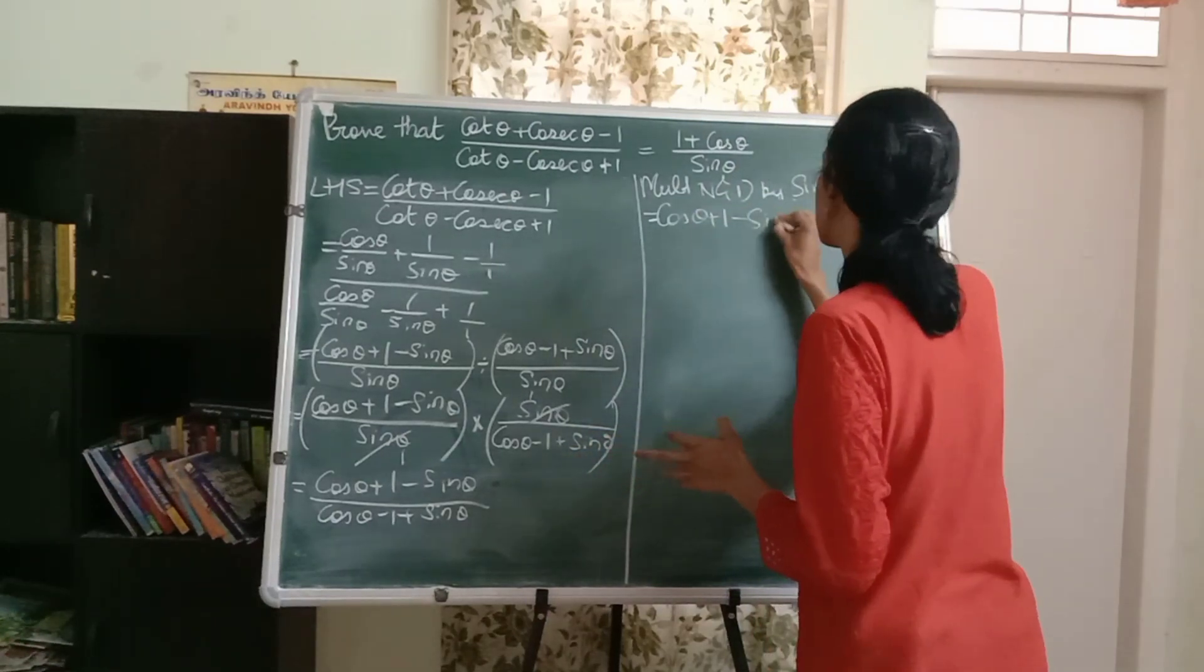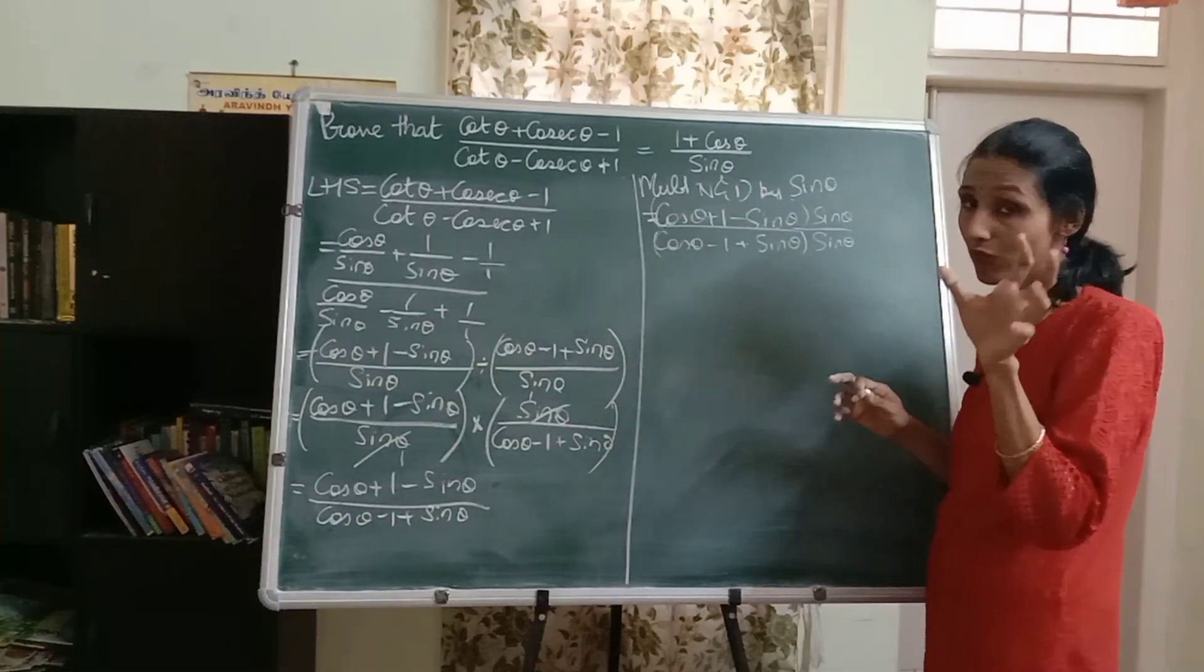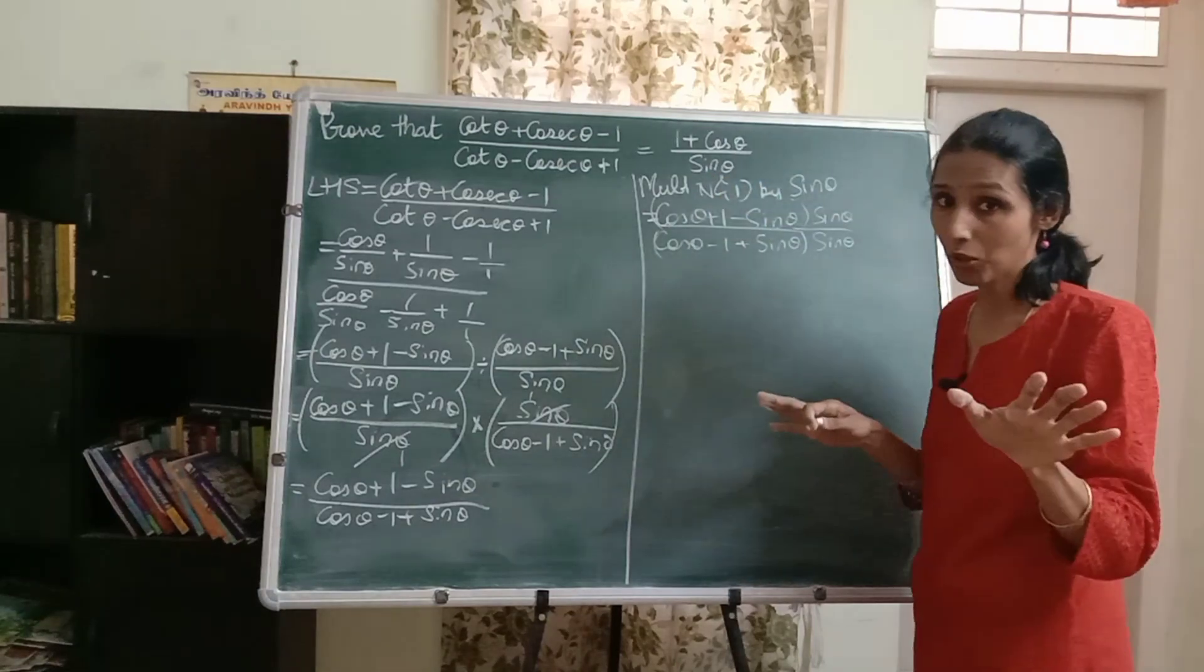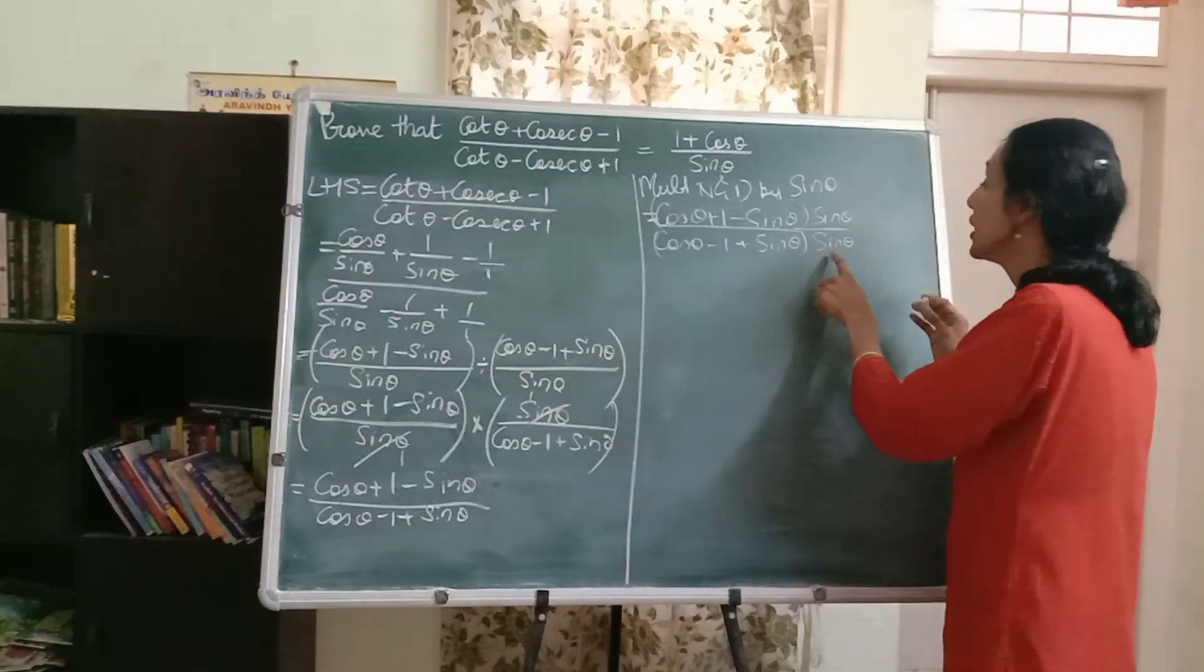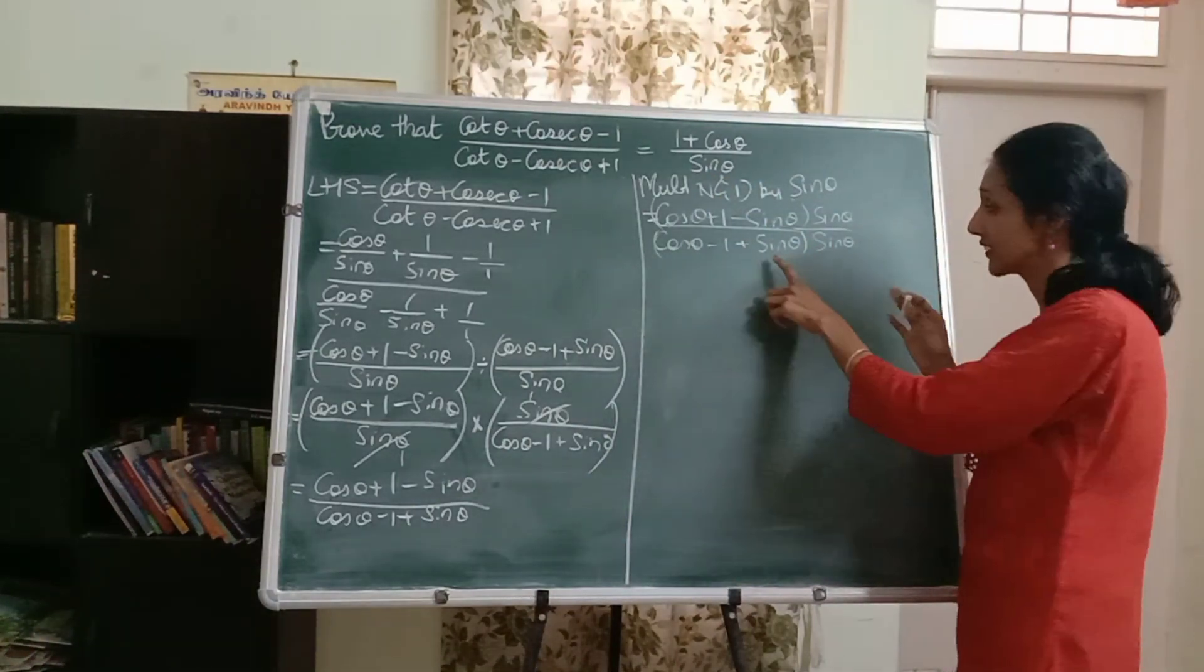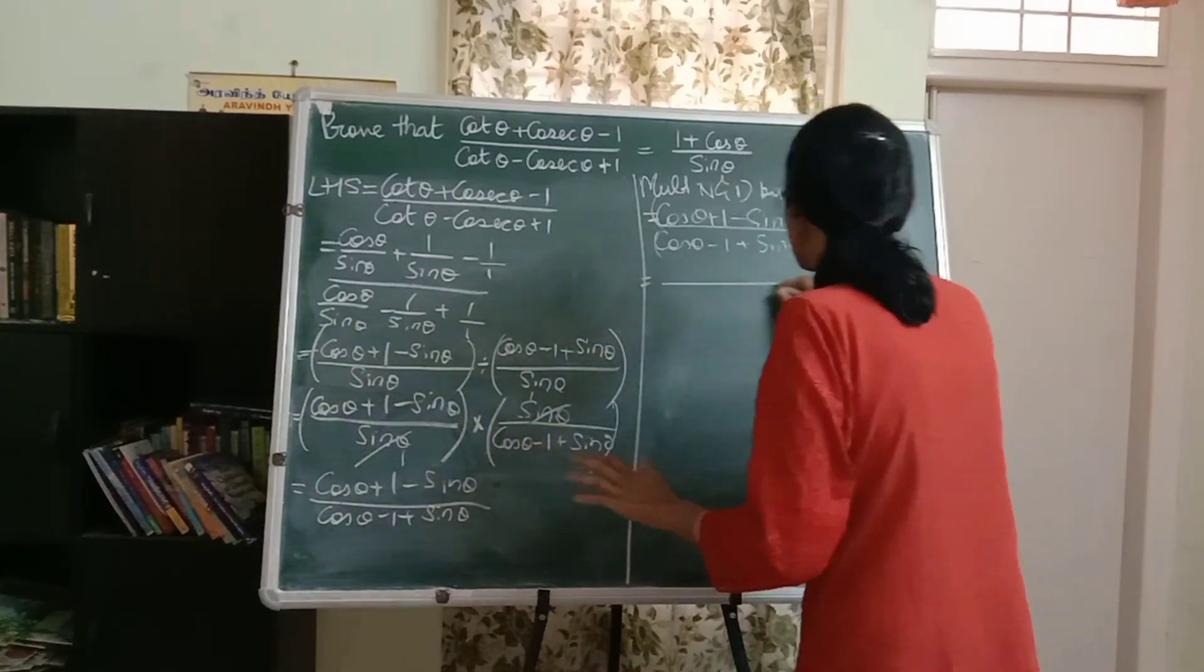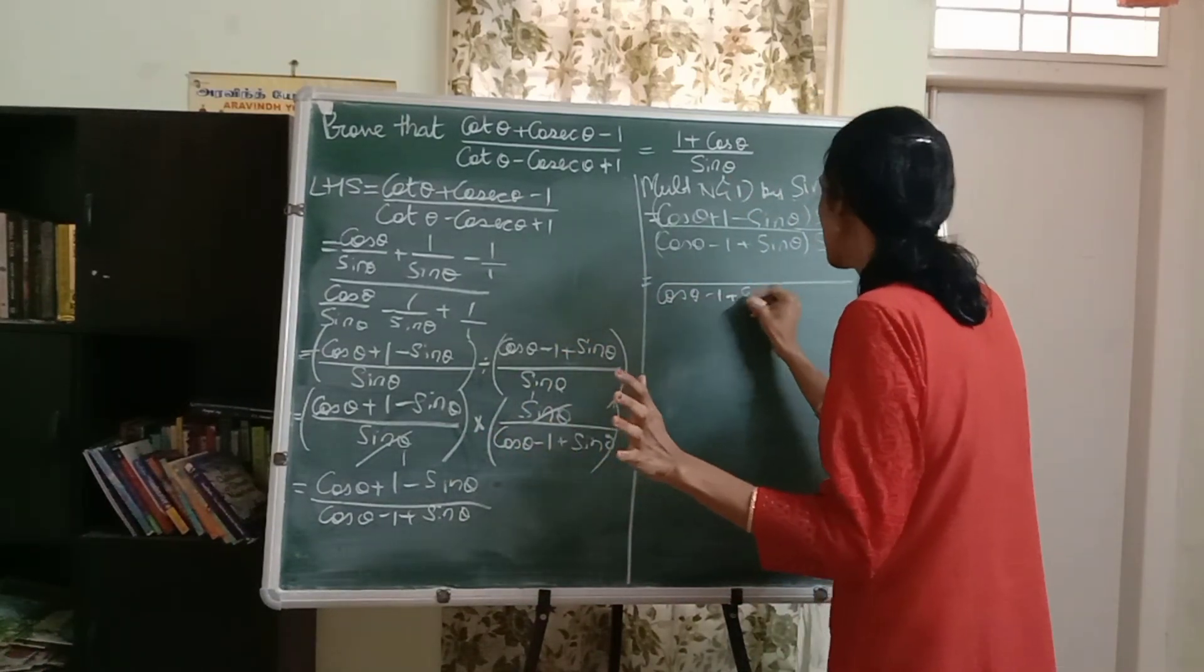So let me just multiply by sine theta over here. Cos theta plus one minus sine theta. Now again, observe what we want. We want sine theta in the denominator, so don't even think of bringing the sine theta inside here. Just leave it as it is. The denominator, you don't even have to change.